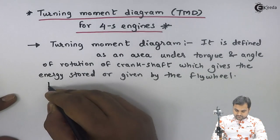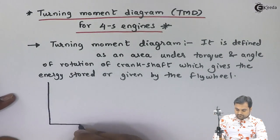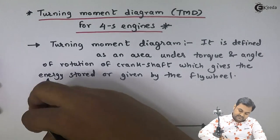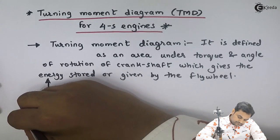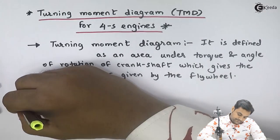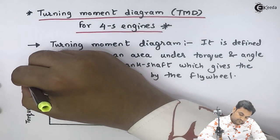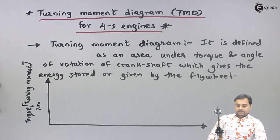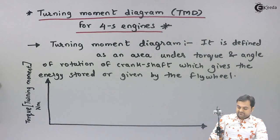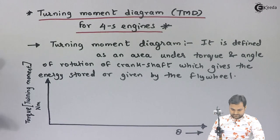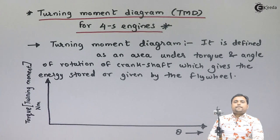Here I am drawing a graph in which on the Y-axis I have torque, also called turning moment, with units of Newton-meter. On the X-axis I have theta, or the angle of rotation of the crankshaft — the crank angle theta.